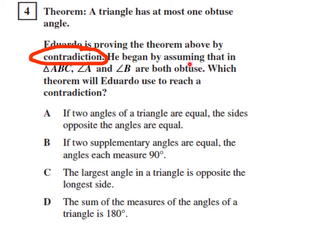So, he began by assuming that in triangle ABC, angle A and angle B are both obtuse. Which theorem will Eduardo use to reach a contradiction?